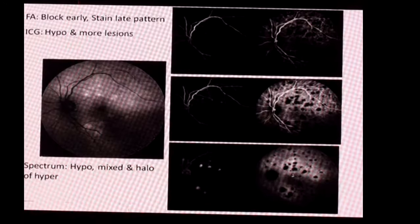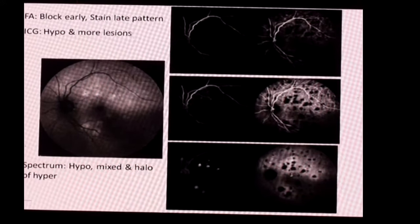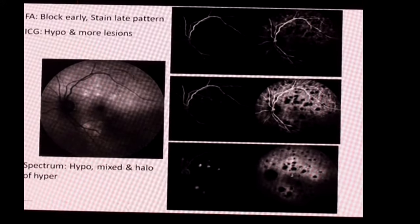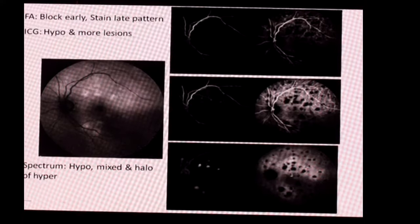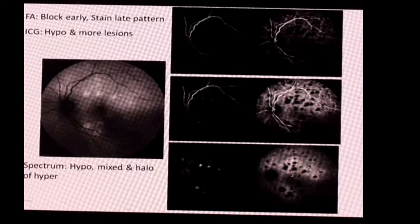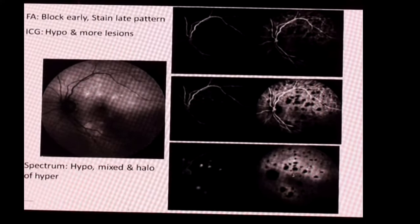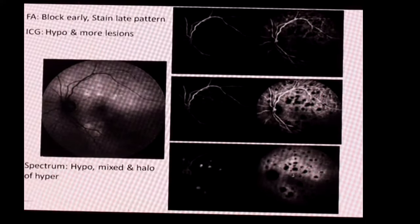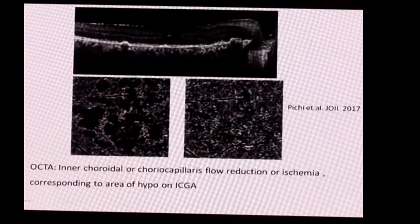With time, the lesions tend to disappear on the ICG. Autofluorescence shows mixed lesions — you can have hypo or mixed hypo patterns, and usually there is a halo of hyper-autofluorescence around these lesions.